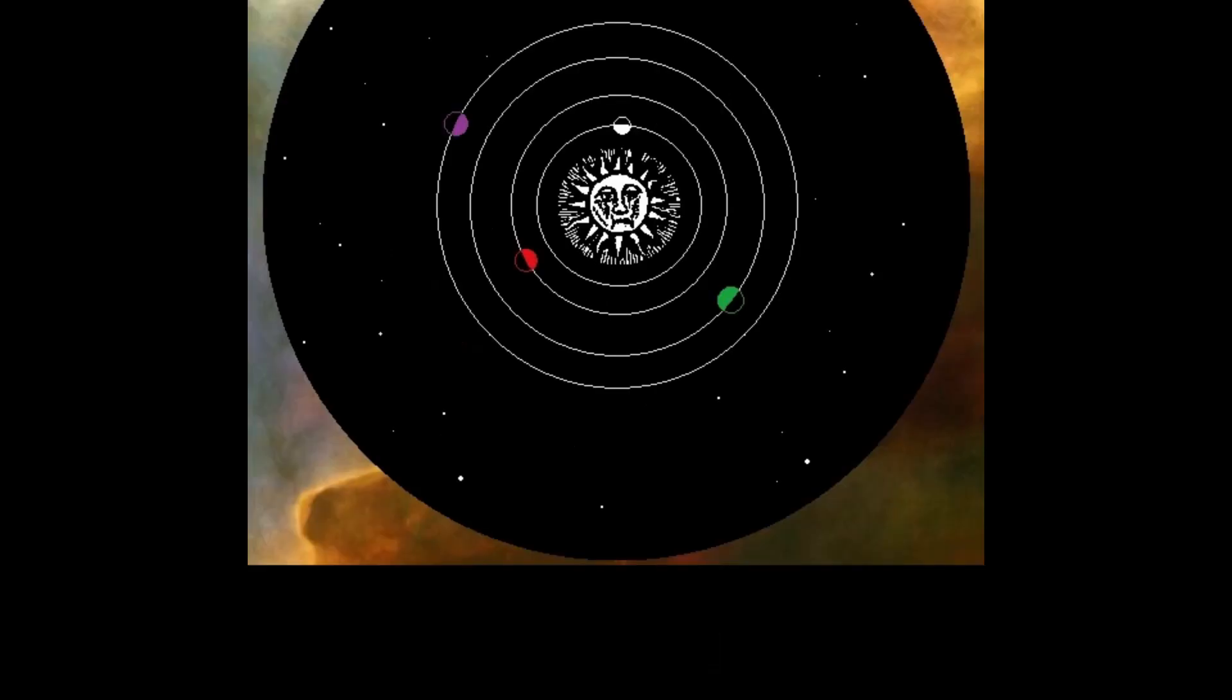The planetary system inside a crystal sphere determines its size. A crystal sphere will generally be at least twice as wide as the orbit of the outermost celestial body. For example, in this solar system, the outermost planet is 1 billion miles from the sun.